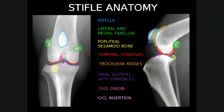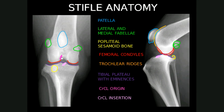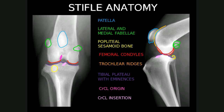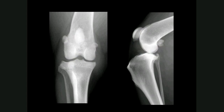Here is a picture demonstrating the stifle anatomy. Take some time to familiarise yourself with it and also pay attention to the origin and the insertion of the cranial cruciate ligament, as this area is often affected by pathology in the dog. This is the same image without the labels, so make sure you can identify all the structures and use it to test yourself.